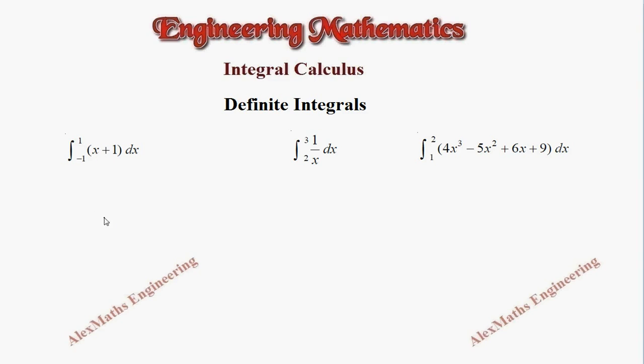When we integrate x it is going to be x²/2, and integration of 1 is x. We have to write the limit which is from -1 to 1. Now you have to substitute the upper limit wherever x is there.